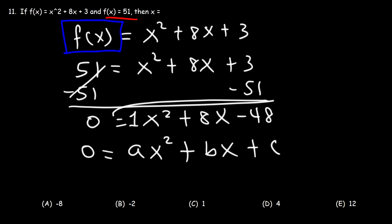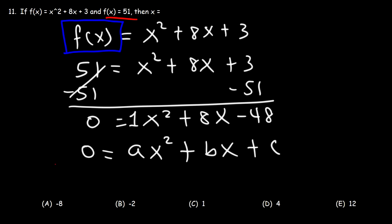What we have here is a polynomial expression with three terms — this is called a trinomial. And when you have a trinomial where the leading coefficient is 1, the best way to solve the quadratic equation is to factor it.